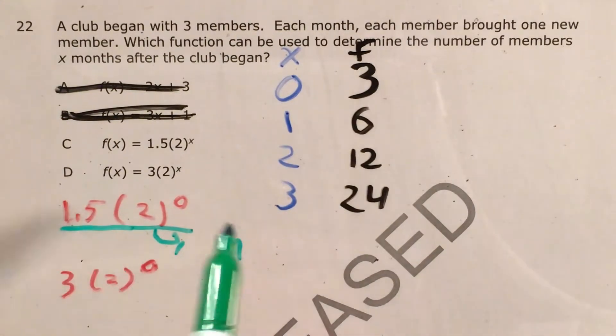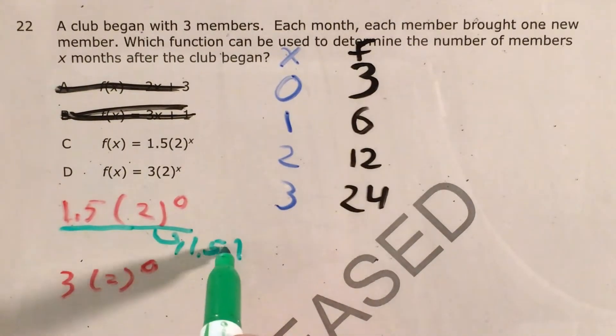So 1.5 times two to the zero is the same thing as 1.5 times one, which is just 1.5. Not what we were expecting, given the numbers that we actually went ahead and figured out.